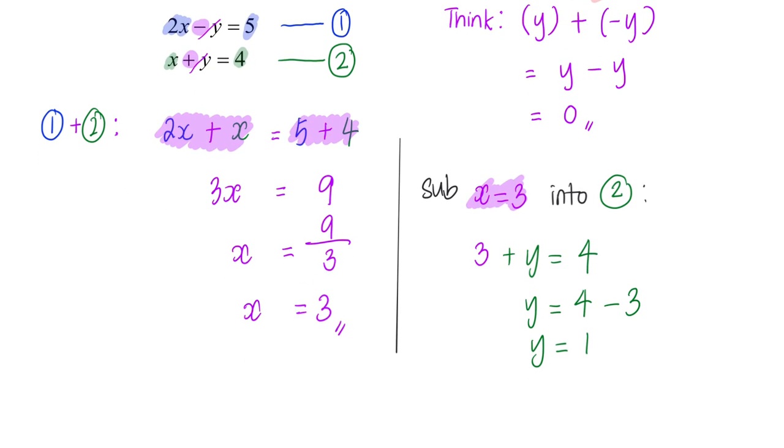Last but not least, do a quick check by substituting the value of x and y into equation 1. Since we already substituted x into 2, we are going to now substitute into equation 1. 2 times x, x is 3, minus away my y. Does this give me value of 5? Yes it does.